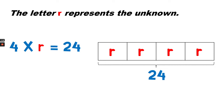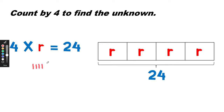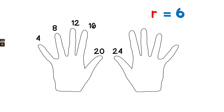We want to know the number of rocks in each group. We can count by 4 to find the unknown: 4, 8, 12, 16, 20, 24. There are 6 fours in 24. So the number of rocks in each group is 6.